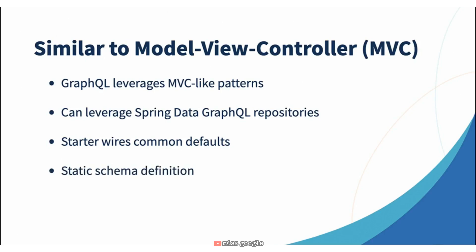We're going to rely on a static schema definition. This is really good practice whether you're writing REST, GraphQL, or SOAP. I'm a big fan of contract-first development, and with GraphQL the schema is the contract. So we can leverage that, build a static schema, and load it automatically through the starter so that we get that contract-first development practice.